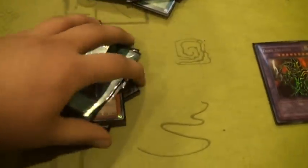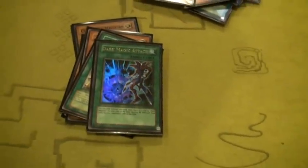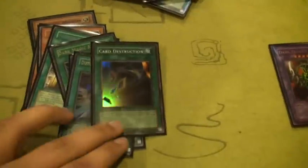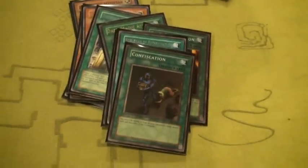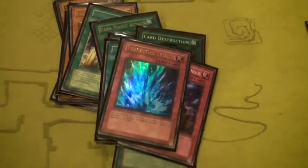And then some Dark Magician based Magic Cards. I got Dark Magic Attack, I have Thousand Knives, Diffusion Wave Motion, and then I have Card Destruction, Nobleman of Extermination, Confiscation, a Bottomless Trap Hole, and a Torrential Tribute.